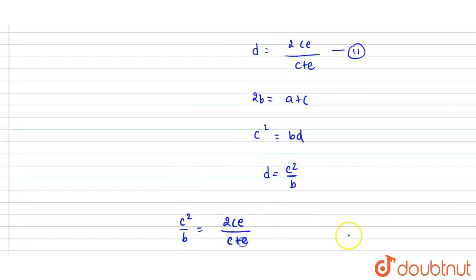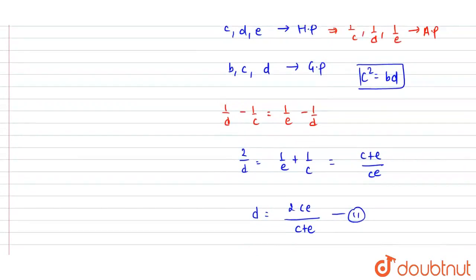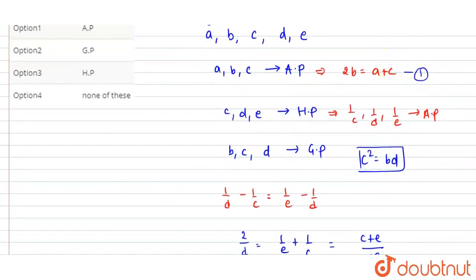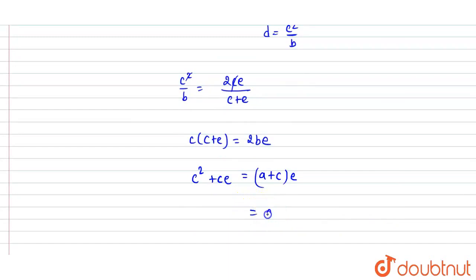This will be C²/B is equal to 2CE divided by C+E. Here is one thing. So here let's see. Now, I will also add this multiplication.